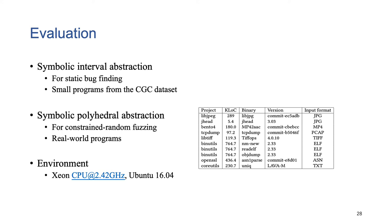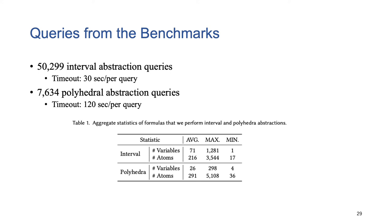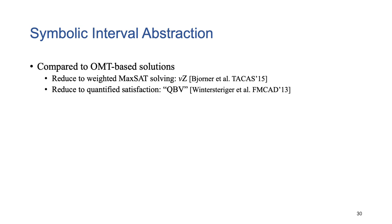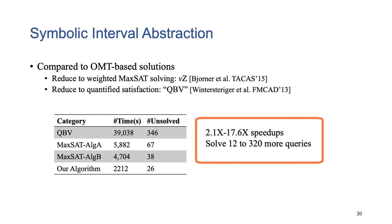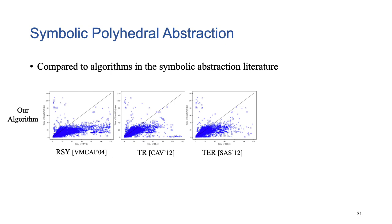We have applied our techniques to two practical clients, namely static bug-finding and constraint random fuzzing. Specifically, we have selected 10 real-world projects for the second client. In total, we collected near 60,000 queries from the clients. First, for symbolic interval abstraction, we compare against several state-of-the-art OMT solvers. Specifically, they can reduce the bit-vector OMT solving problem to MaxSAT formulas and to quantified bit-vector formulas. Our approach can achieve 2.1 to 17.6 times speed-ups. In addition, we can solve 12 to 320 more queries.